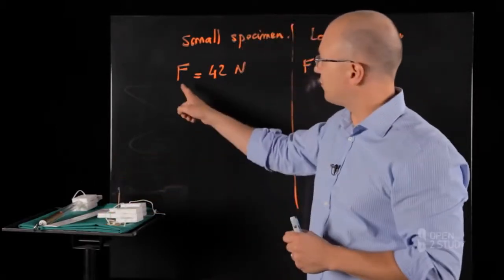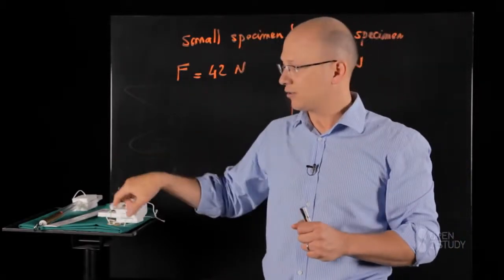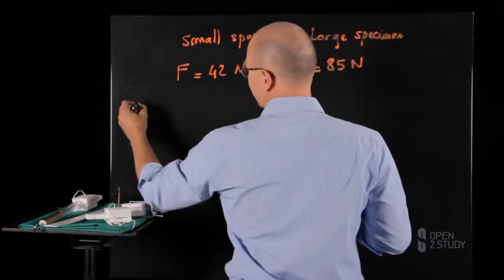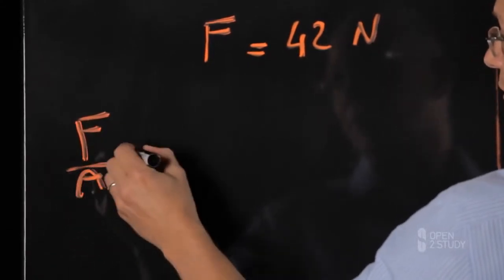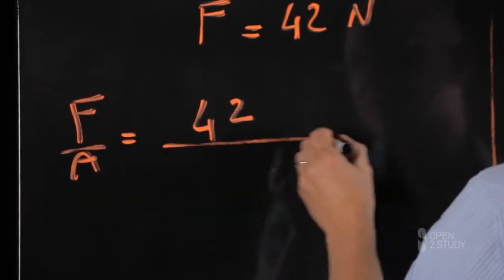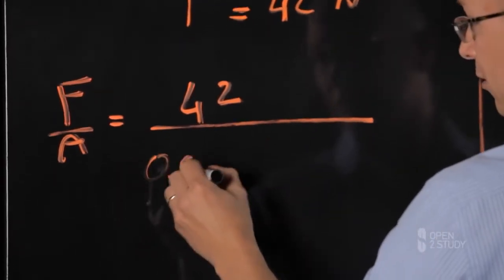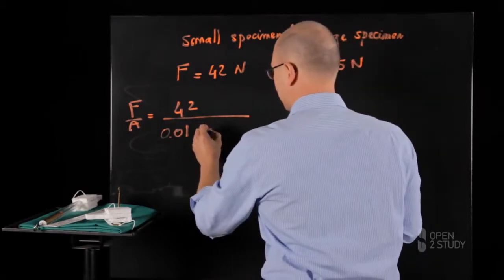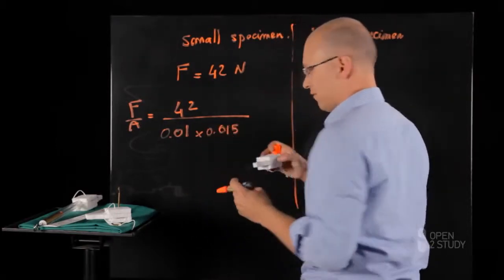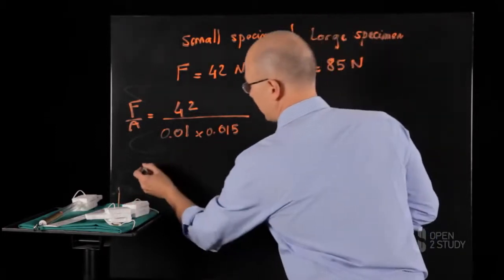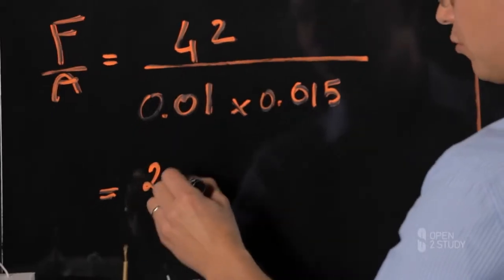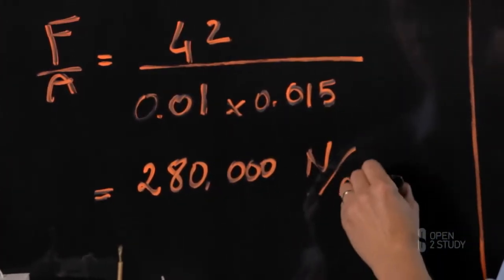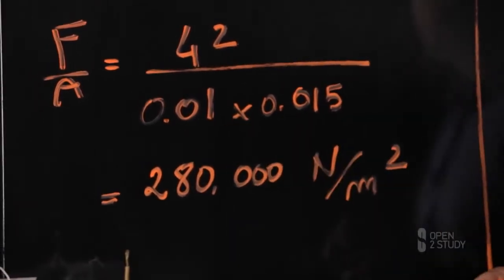Let's do a simple calculation and divide this force by the cross-sectional area of the specimen. For the small specimen, F over A is 42 newtons divided by 0.01, which is 10 mm thickness, times 0.015, which is 15 mm across. And that gives us about 280,000 newtons per meter square. These numbers are expressed in meters.